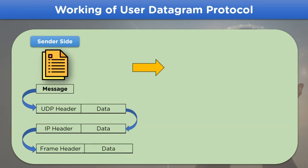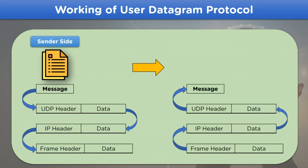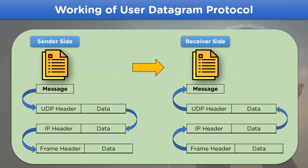As for the last step on the sender side, this part is handed over to the frame section where it is transformed with the frame header and data format, and transmitted over the network channel. On the receiver side, the first step is decoding of the frame header and data part into the IP section. This IP packet is then divided into the UDP header part and data part, from where the message is retrieved and received by the receiver.